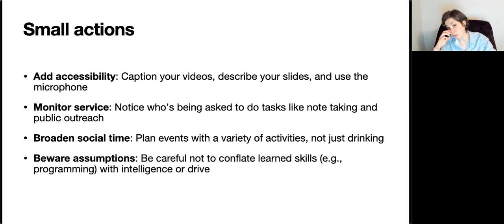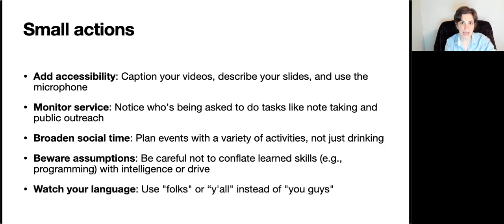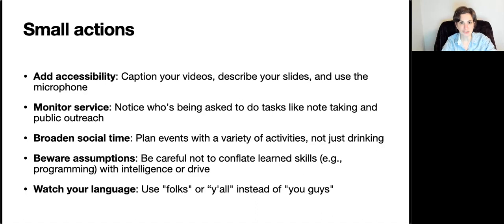Think carefully about the assumptions you're bringing to the table. For example, be careful not to conflate a skill that can be learned — like how well someone programmed — with skills that are more inherent, like intelligence or drive. And finally, watch what you say. Try to avoid using words that are gendered, like 'you guys,' and instead use words like 'folks' or 'people.' For example, instead of saying 'those robotics guys released a great algorithm,' say 'those robotics folks' or 'a bunch of robotics people went to the bar.'